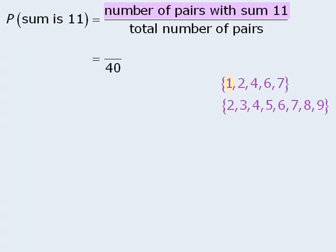So we'll begin with 1 in the first set. In the second set, we need a 10 so that the two numbers add to be 11. Since there are no 10s in the second set, we'll move on to the next number in the first set.